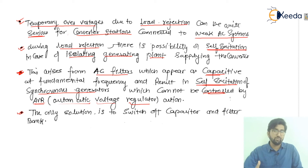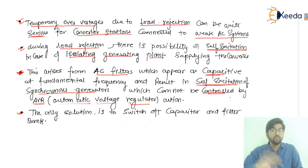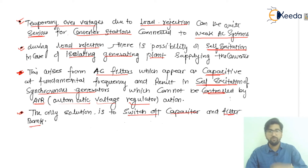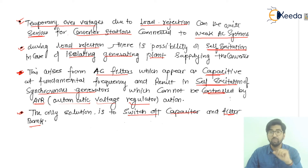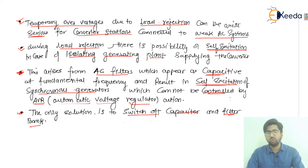Since the automatic voltage regulator is unable to control self-excitation, the only solution left is to switch off the capacitor and filter bank. If the self-excitation process starts to occur and cannot be controlled by the AVR, the only available solution is to switch off the capacitor and the filter bank. I hope you have understood all the points covered. Thank you so much, bye bye.